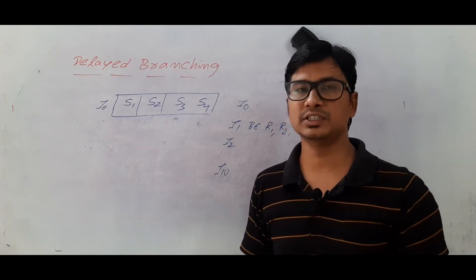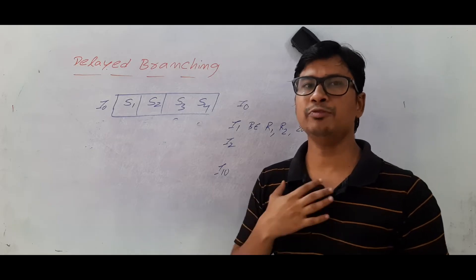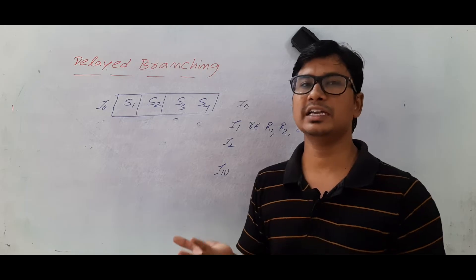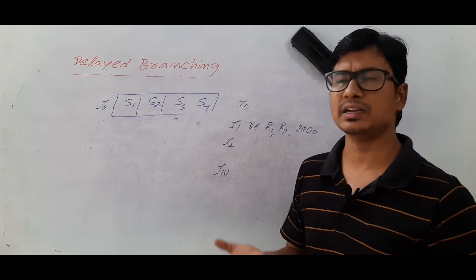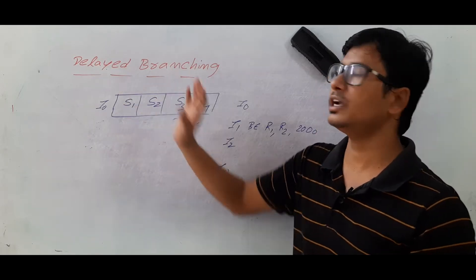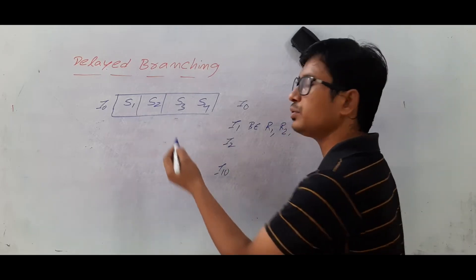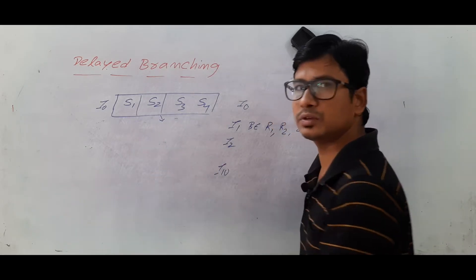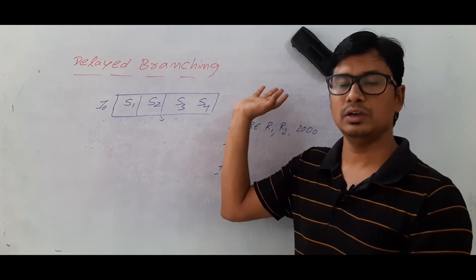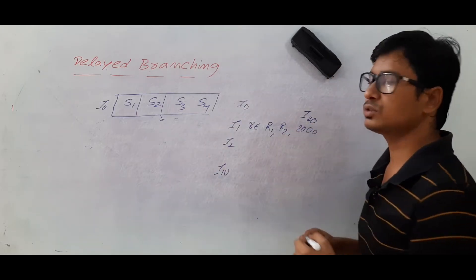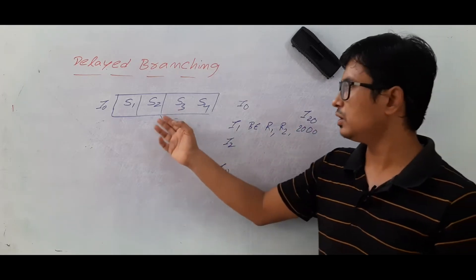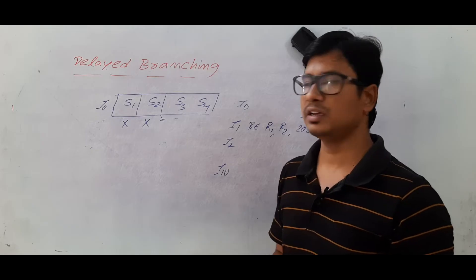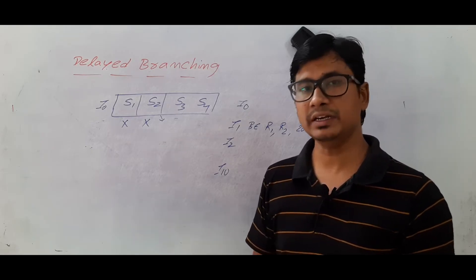This is what branch prediction does. But what is the problem with branch prediction? If my prediction is wrong, I am removing all the instructions I have already executed — I just flushed them. So my prediction being wrong means I just burned my hands. So why burn your hands? Instead, delay the branch — meaning, you will come to know after stage two whether to execute the instruction at location 2000 or the next sequential instruction, so start fetching only after stage two. But this means you are introducing stall cycles, and stall cycles degrade pipeline performance. This is the delayed branching technique.